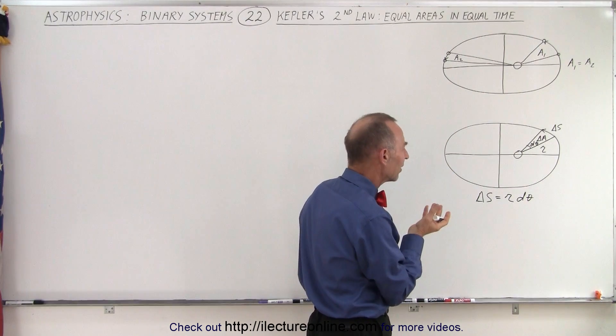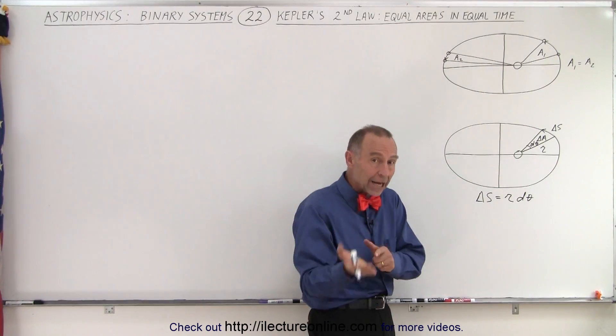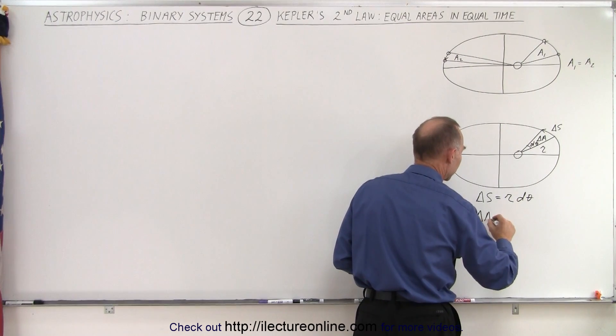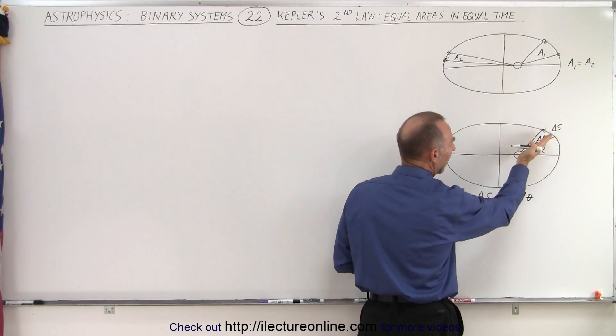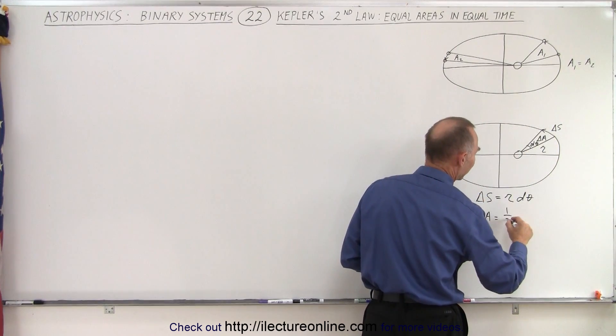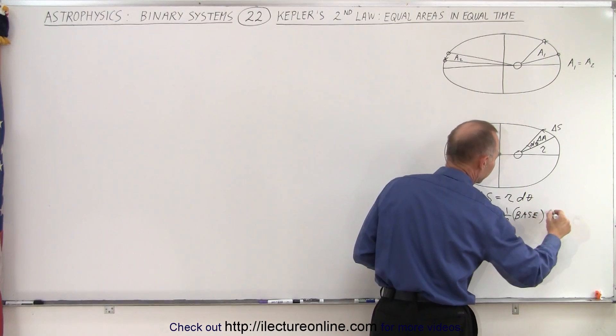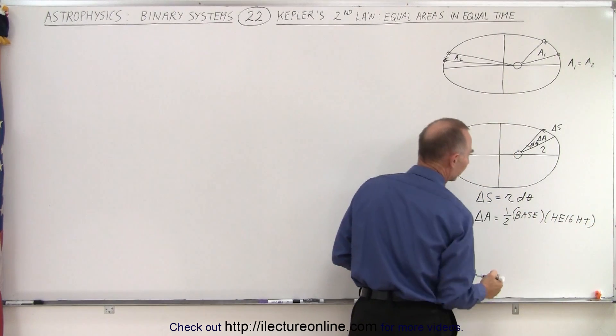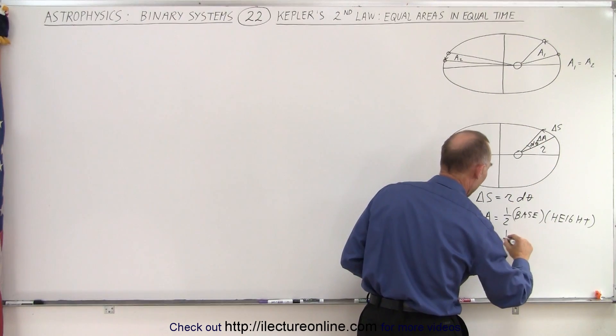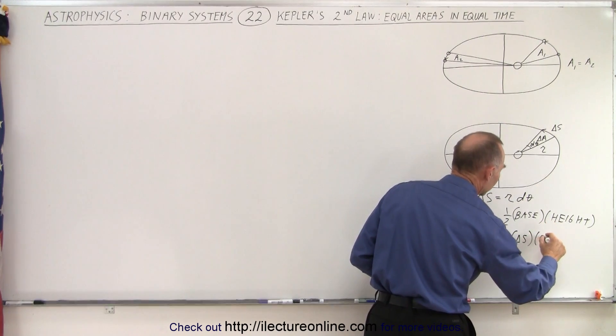So then what we can say is, what would be the description of the area that swept out by that imaginary line? So we can say that delta area is equal to the area that we see here, and it's approximately a triangle, so it would be one half the base times the height of the triangle. And of course the base, that's equal to delta S, and the height would be R. So this would be equal to one half the base, which is delta S, times the height, which is R.